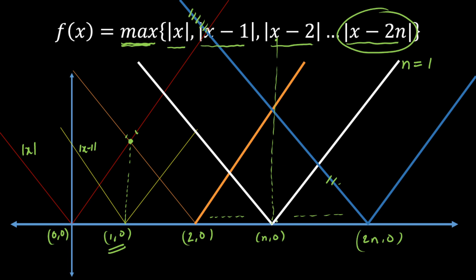And after the midpoint, that is n comma 0, mod of x will be the maximum. So now once I have defined the function, I can integrate from any value they have given.